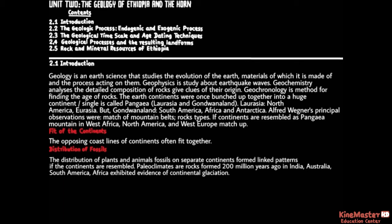The earth's continents were once bunched together into a huge single continent called Pangaea, which split into Laurasia and Gondwana. Laurasia comprised North America and Eurasia, while Gondwana comprised South America, Africa, and Antarctica.